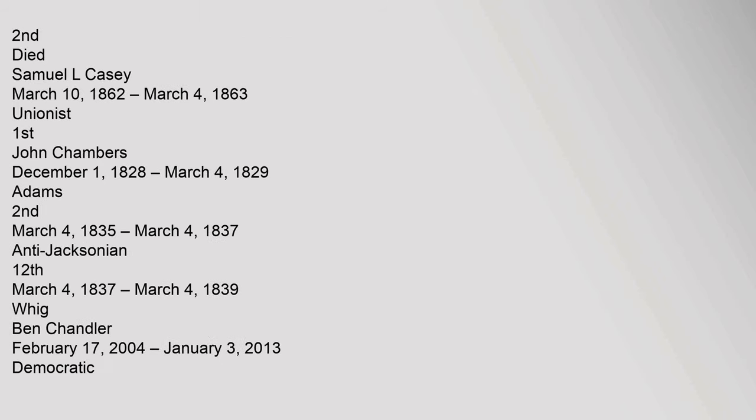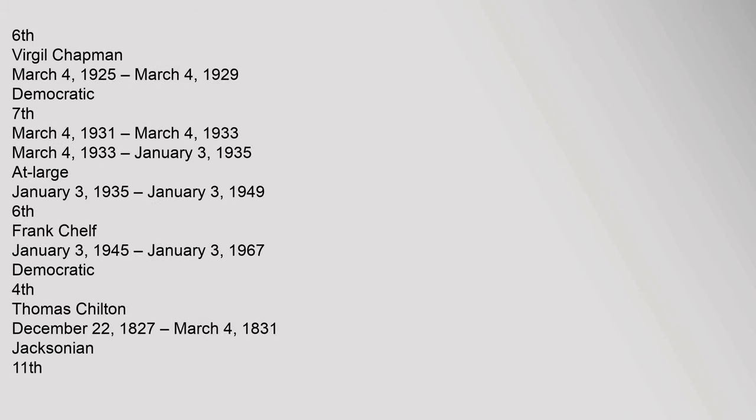Samuel L. Casey, March 10, 1862 to March 4, 1863, Unionist, 1st. John Chambers, December 1, 1828 to March 4, 1829, Adams, 2nd; March 4, 1835 to March 4, 1837, Anti-Jacksonian, 12th; March 4, 1837 to March 4, 1839, Whig. Ben Chandler, February 17, 2004 to January 3, 2013, Democratic, 6th.